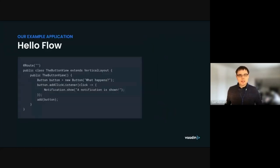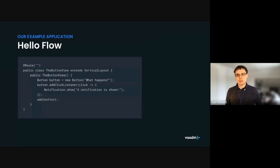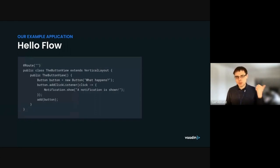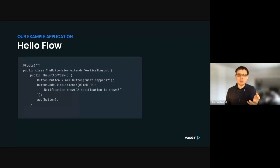So as said, we're going to see what happens when you click a button. For this I built a really complex Vaadin application — it's one Java class. We create a button, add a click listener to it, add the button to the view which is a vertical layout, and when you click the button it runs a click listener that shows a notification. That's the whole application. Easy as that.